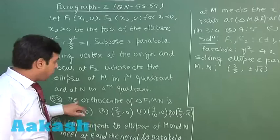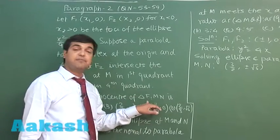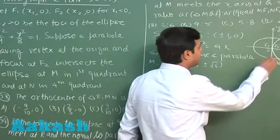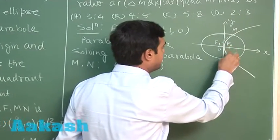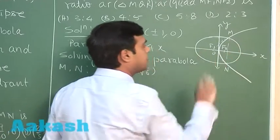The first one, the orthocenter of triangle F1MN, that is we are talking about the orthocenter of the triangle formed by these three points.